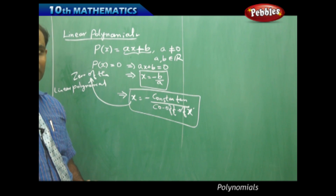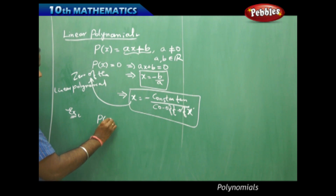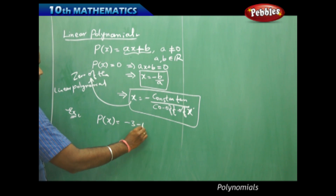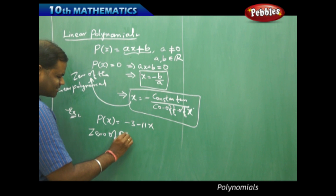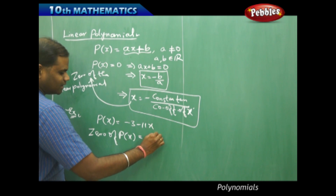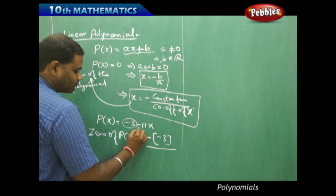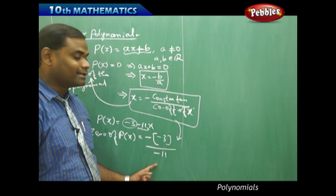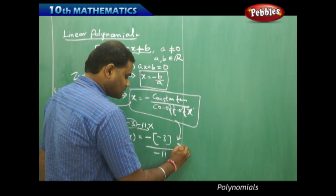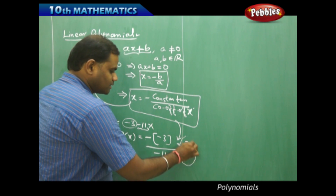Before we proceed, let's take an example to support this statement. For example, if I have a linear polynomial minus 3 minus 11x, then the zero of P of x is directly given as negative times the constant term divided by the coefficient of x, which is negative 11. Using this formula, I get minus of minus 3 over negative 11.